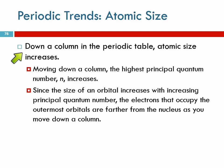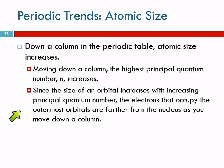Going down a column, the atoms get bigger. This makes sense — lithium has three electrons while potassium has 19 electrons. Which one is going to be bigger? The one with more electrons and protons. The reason they get bigger is that the highest principal quantum number increases. They go from having electrons on the first floor of the hotel to the second, third, and fourth floor. The higher the level that electrons occupy, the larger the atom.